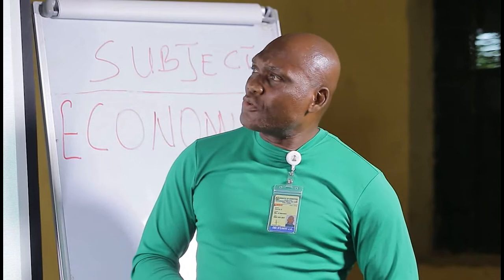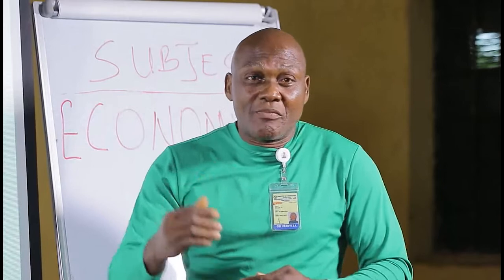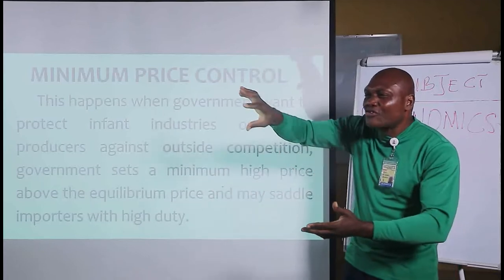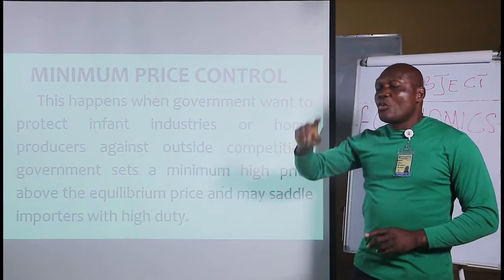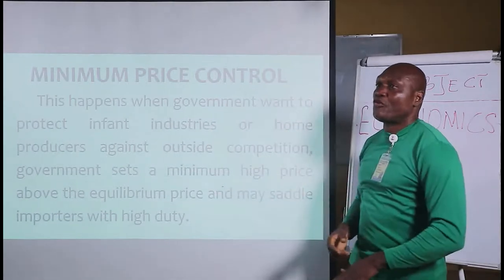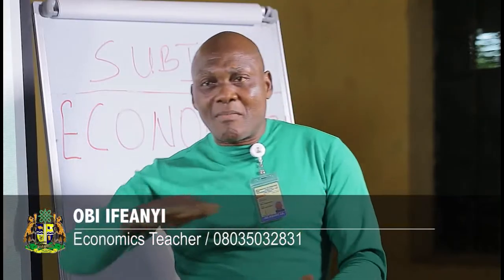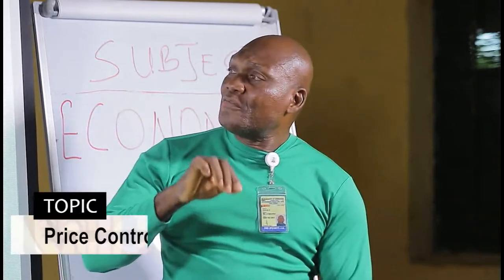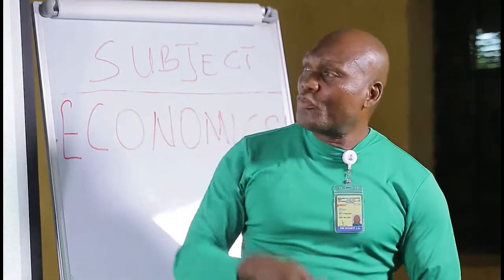But when this happens, there will be surplus because people will not buy goods the way they used to due to the high price. Government will now step in and buy up that surplus. If the surplus is left in the market, the law of demand and supply will take its course — if supply exceeds demand, prices will fall. So government must buy up the surplus to maintain the minimum high price.